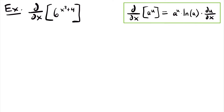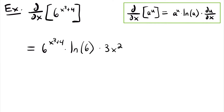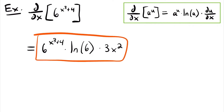For this example, u is going to be equal to x cubed plus 4. Using this derivative rule, the derivative is equal to 6 to the power of x cubed plus 4 times the natural log of the base 6 times the derivative of u. Since u is x cubed plus 4, we multiply by the derivative of that function. The derivative of x cubed, using the power rule, will be 3x squared — we multiply the exponent down to get 3 times x to the power of 3 minus 1, which gives an exponent of 2. So this is the derivative of this function.